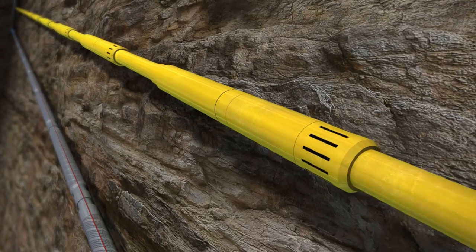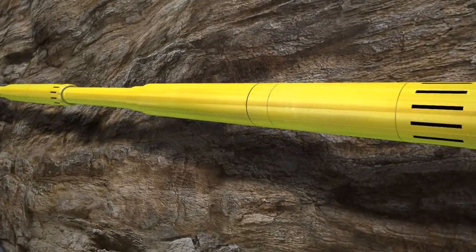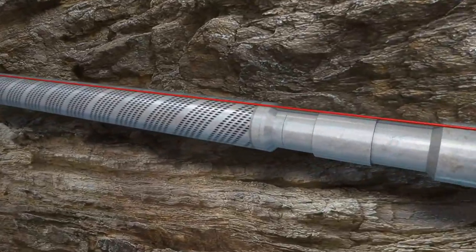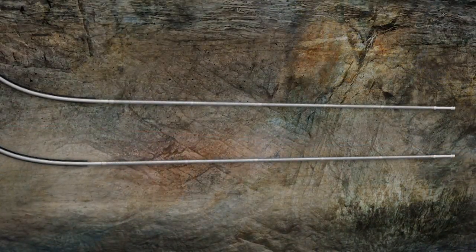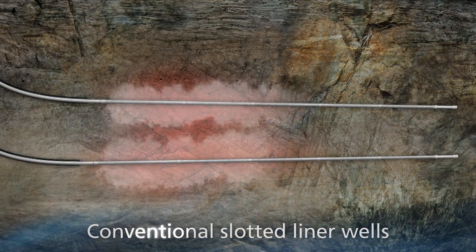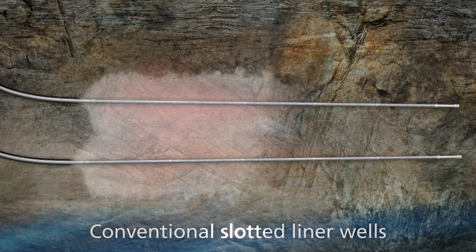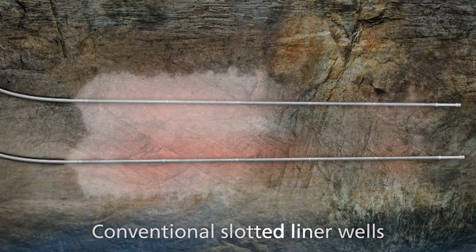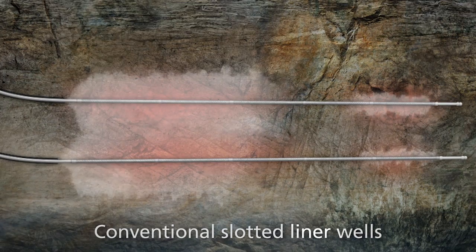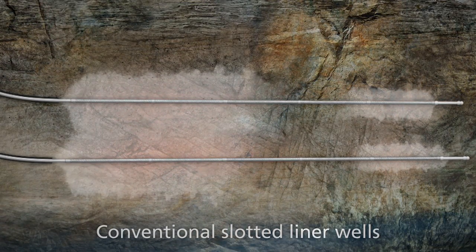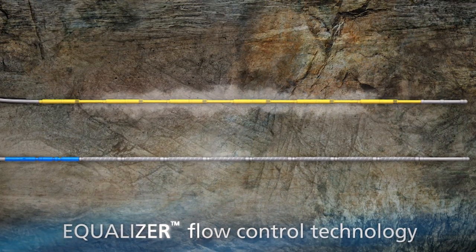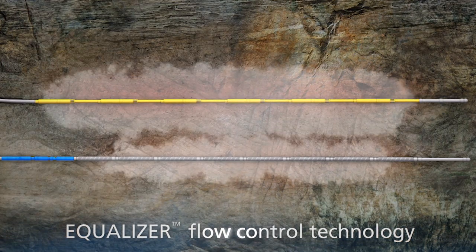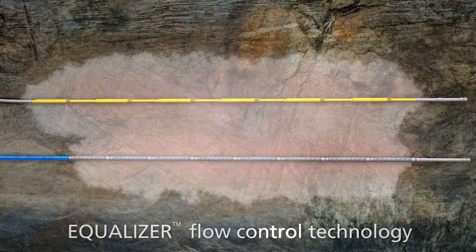Equalizer flow control technology is a key component of our SAG-D solution. This technology is used in injector and producer wells to create pressure drop over their horizontal length and equalize steam flow and oil production. Fiber optic distributed temperature sensors monitor steam distribution in real time. During the heating phase, steam injected into conventional slotted liner wells disperses unevenly, with good coverage at the heel but inadequate heating near the well's toe. Operators sometimes compensate for this uneven distribution by inserting tubing to place steam at the toe, but the well in between does not receive adequate coverage. With Equalizer flow control technology, injected steam forms an evenly distributed steam chamber along the length of the injector well. This eliminates the need for an internal tubing string to place steam at the toe and enables use of smaller casing in SAG-D well pairs.